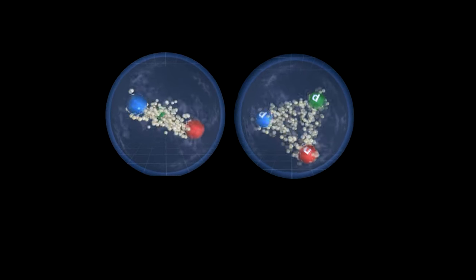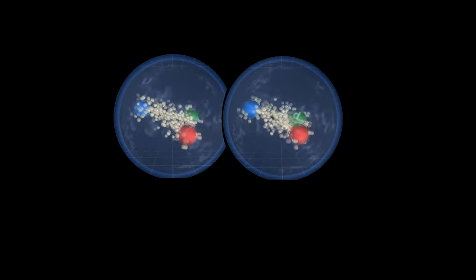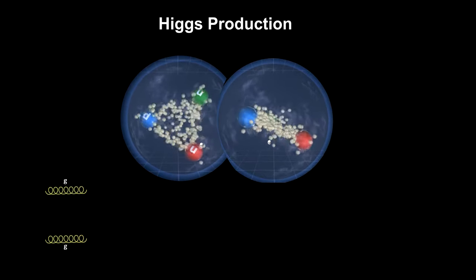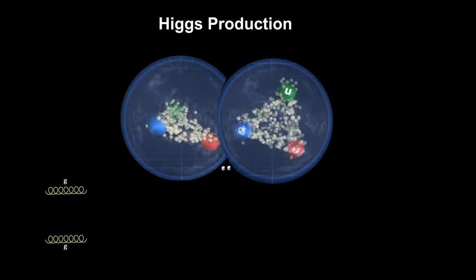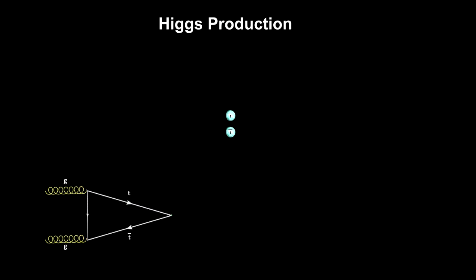As two colliding protons approach each other, they overlap. Then two highly energetic gluons collide, creating a virtual top quark and anti-top quark pair. This is called gluon-gluon fusion.